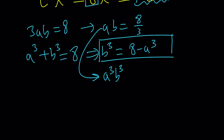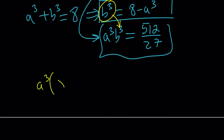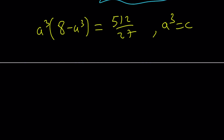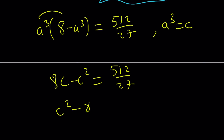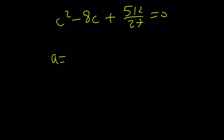Let's do it — not too hard. a³·b³ = 8³ = 8 × 8 × 8 = 64 × 8 = 512. You can also look at it as 2 to the 9th power because 8 is 2³. Now we're going to take this b³ and substitute here. That gives us a³ × (8 - a³) = 512/27. And then if a³ is called c, we get 8c - c² = 512/27. Then you'll end up getting a quadratic.